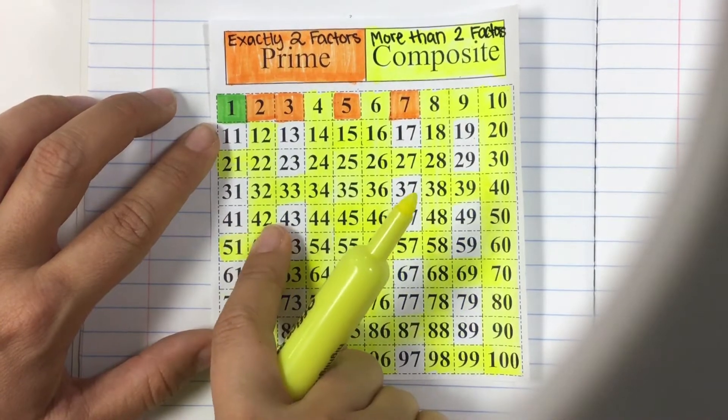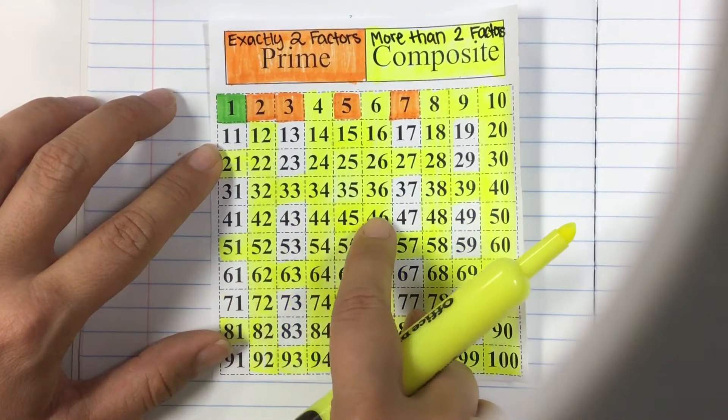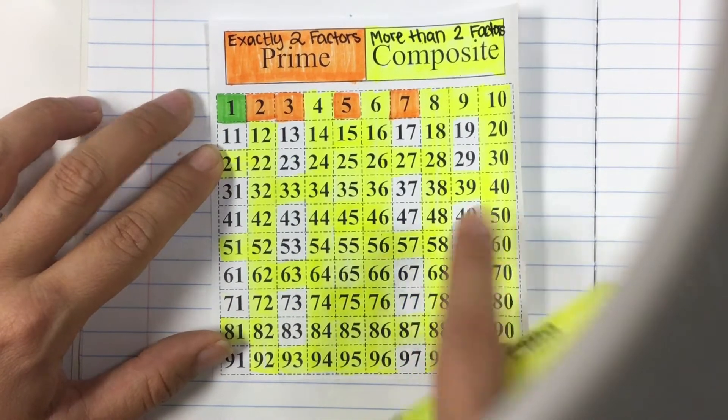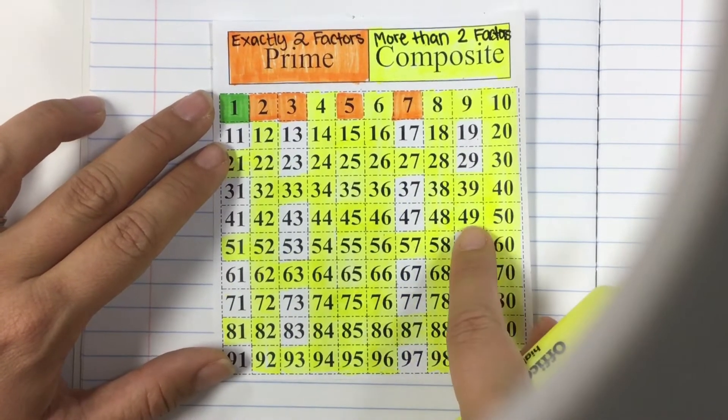Let's see if we can find one that's not highlighted yet. 49. 49 wasn't divisible by anything other than 7 so far. So we have to make sure we highlight 49. Continuing through the multiples.